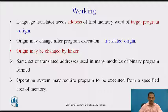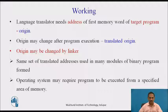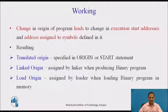How does the whole system work? A language translator needs the address of the first memory word of the target program, called the origin. The origin might be changed after program translation, at which point it is called the translated origin. The origin might also be changed by the linker when the same set of translated addresses is used in many modules, or when the operating system requires the program to execute from a specified area of memory.